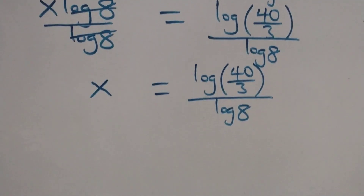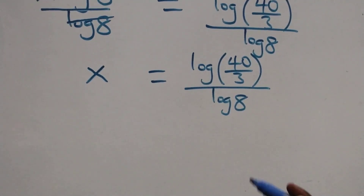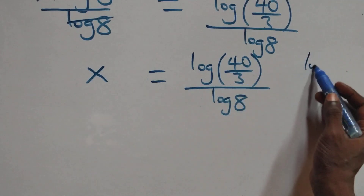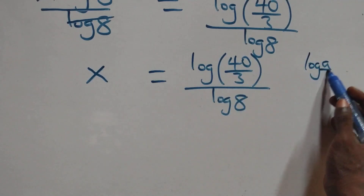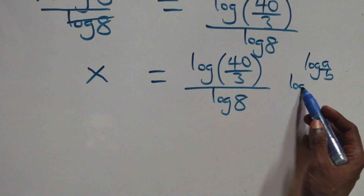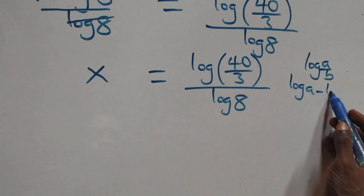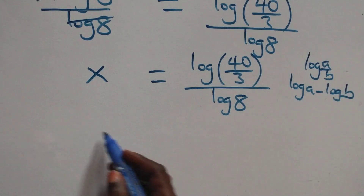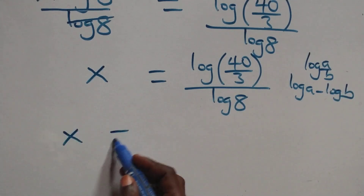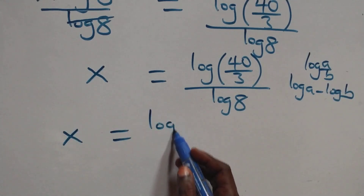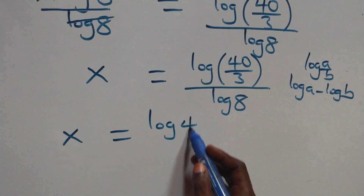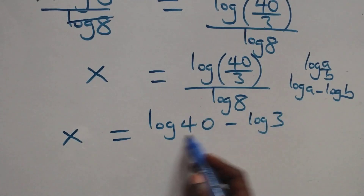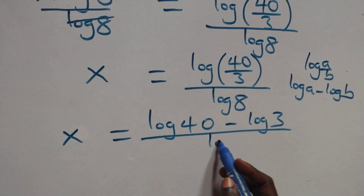Which implies — this follows on the law of logarithm. When we have log a over b, which equals log a minus log b. That is, all we have here becomes x equals to log 40 minus log 3, over log 8.